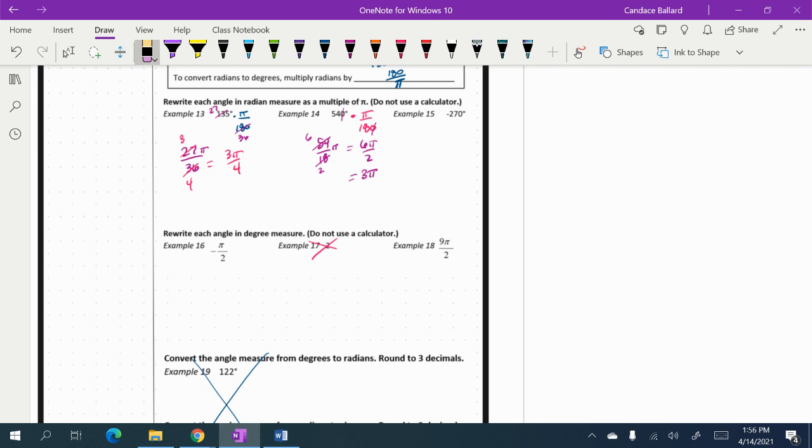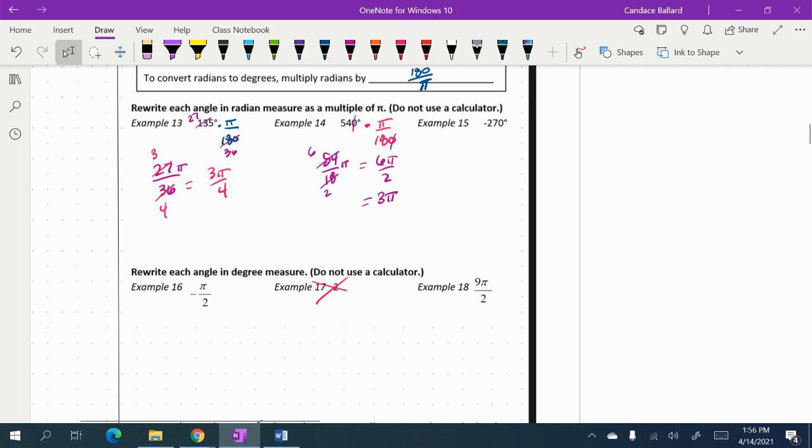So if we're going to rewrite an angle measure as a radian to radian measure, remember we have to multiply by pi over 180.